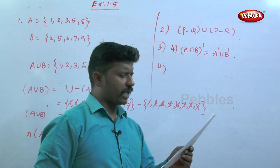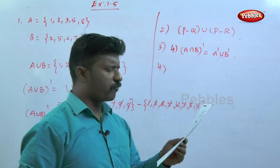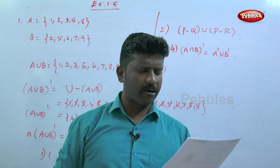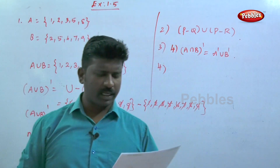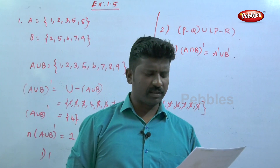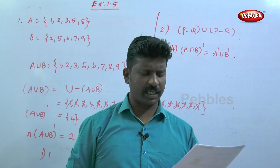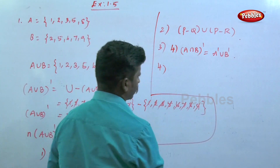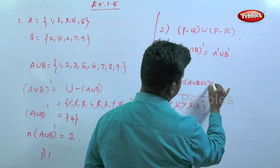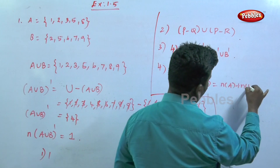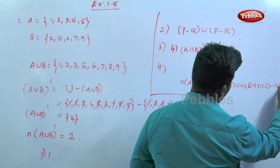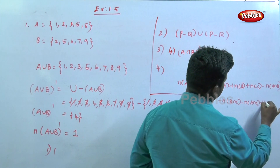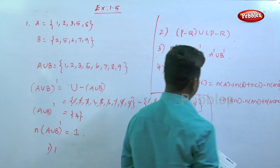Question number four: given n(A∪B∪C) = 40, n(A) = 30, n(B) = 25, n(C) = 20, n(A∩B) = 12, n(B∩C) = 18, n(A∩C) = 15, find n(A∩B∩C). Use the inclusion-exclusion formula: n(A∪B∪C) = n(A) + n(B) + n(C) - n(A∩B) - n(B∩C) - n(A∩C) + n(A∩B∩C).